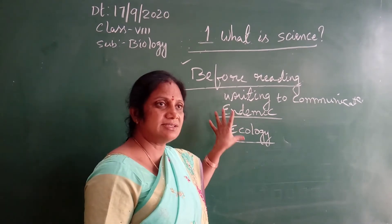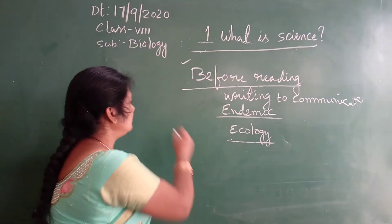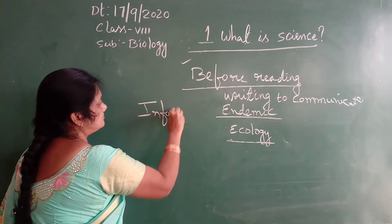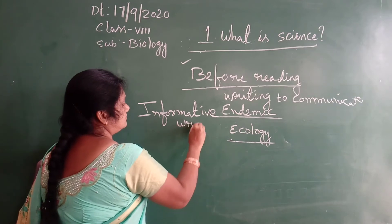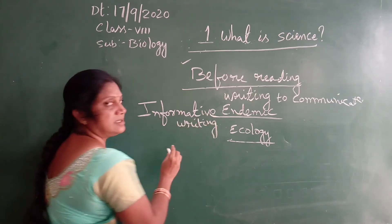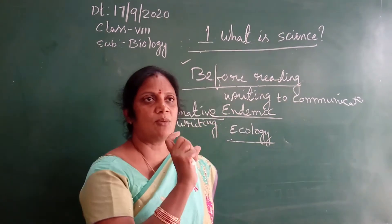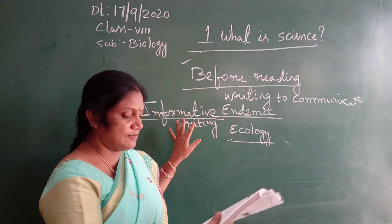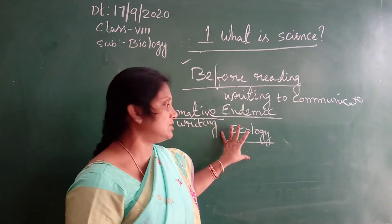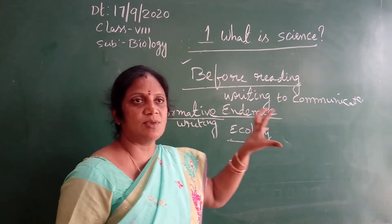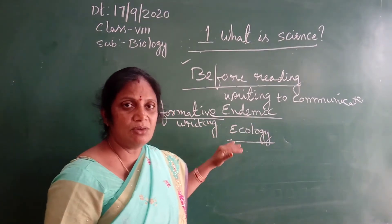The writings are also of different modes. The first one is informative writing. A form of statement, a form of information — that is called informative writing. You record your observations, inferences, and conclusions. This is giving your type of information to others by conducting the experiments. This is called informative writing.